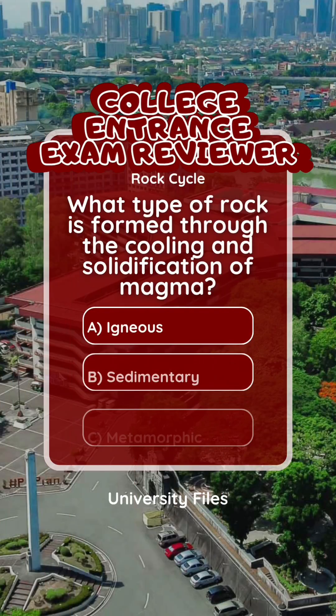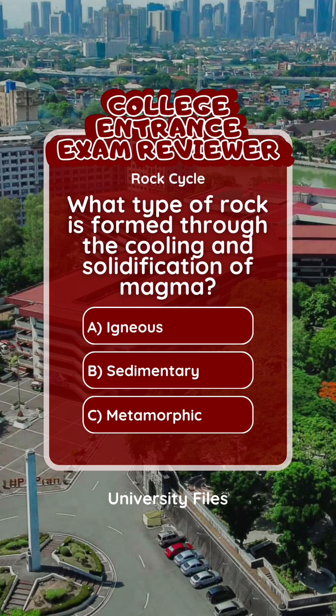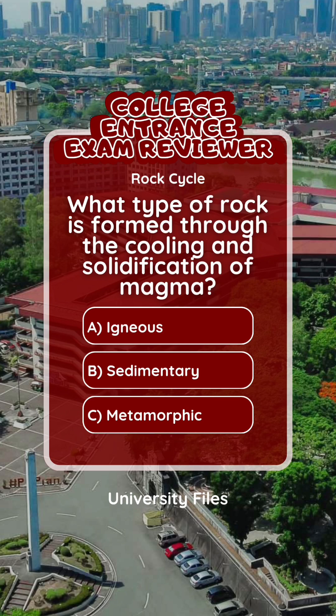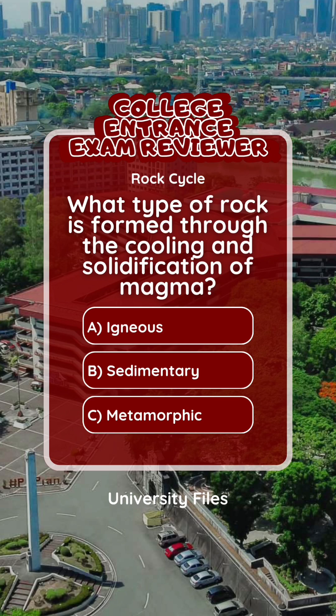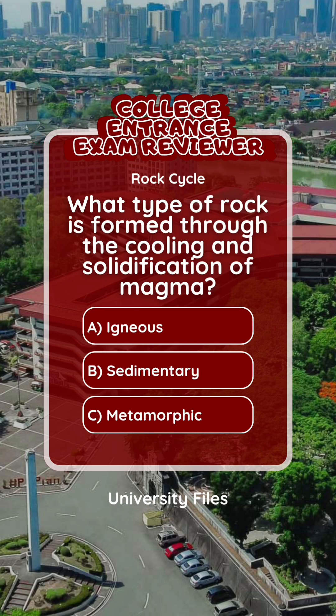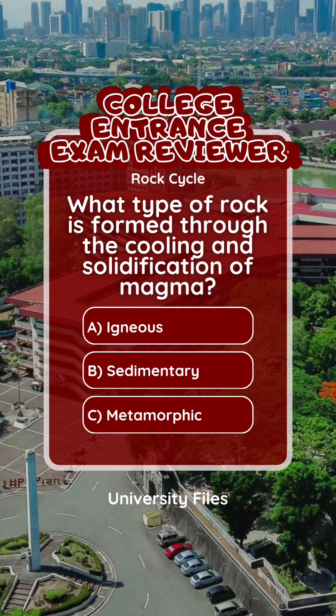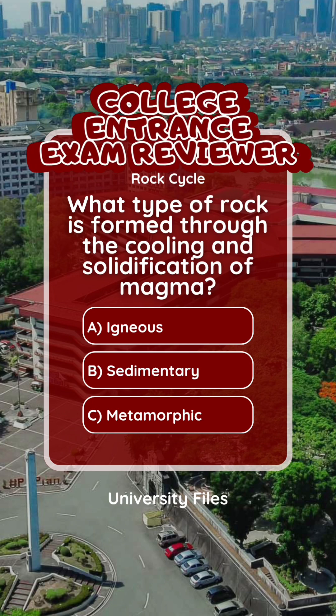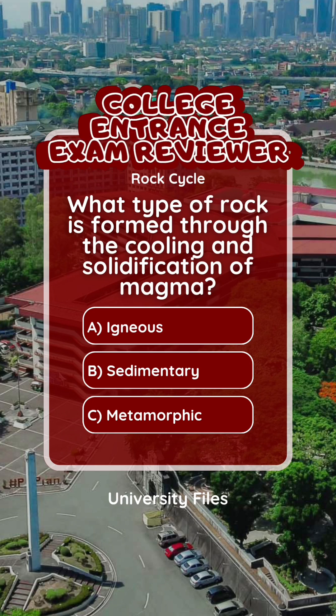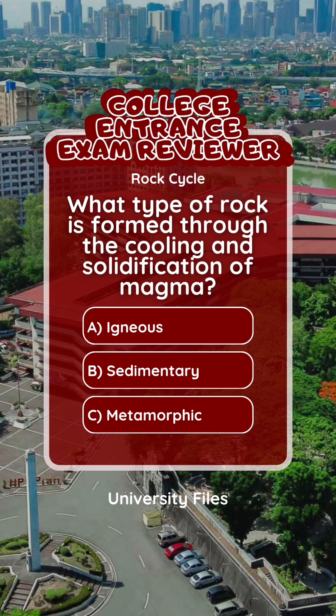Question 3: Rock cycle. What type of rock is formed through the cooling and solidification of magma? A. Igneous. B. Sedimentary. C. Metamorphic.